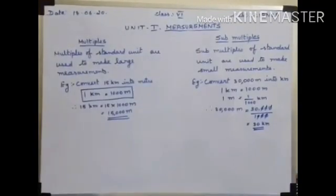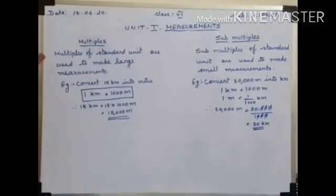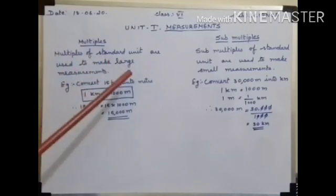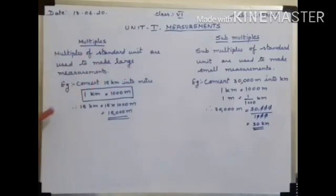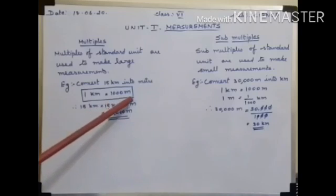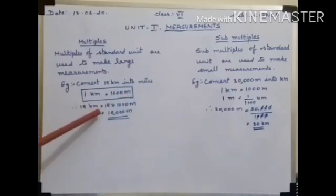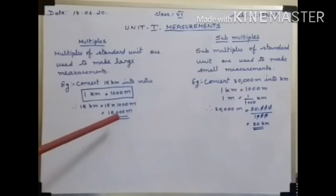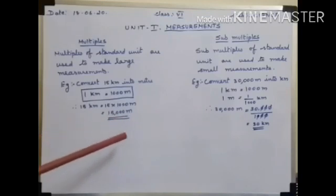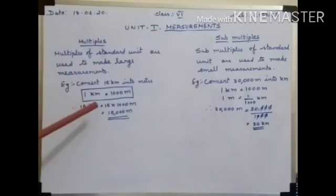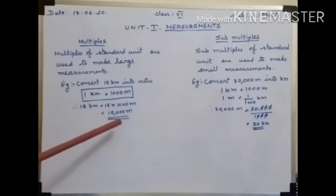Now, we are going to learn about multiples and submultiples of SI units. Multiples of a standard unit are used to make large measurements. For example, let us convert 15 kilometers into meters. We know that 1 kilometer is equal to 1000 meters. Therefore, 15 kilometers is equal to 15 × 1000 meters, which equals 15,000 meters. Another example: convert 7 kilometers into meters. 1 kilometer equals 1000 meters, so 7 kilometers equals 7 × 1000 = 7,000 meters.